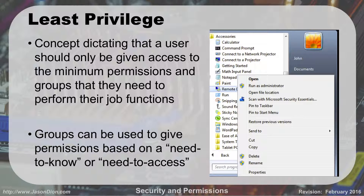Groups can be given permissions based on a need-to-know or need-to-access basis. For instance, if we split this class into the payroll department and the receptionist pool — do receptionists need access to how much everybody's getting per hour? No. Do payroll folks need to know? Yes. So we'll make two different groups, payroll and receptionist. The payroll group will have access to that information; the receptionists will not. That's the idea of least privilege. But maybe both groups need access to print to the printer, so we'll have them in a group called printers. We give groups and permissions based on what they need to do.